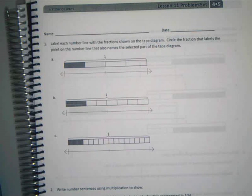Who can read me the directions for number one? Jacob. Label each number line with a fraction shown on the tape diagram. Circle the fraction that labels the point on the number line that also names the selected part of the tape diagram. Alright, great.